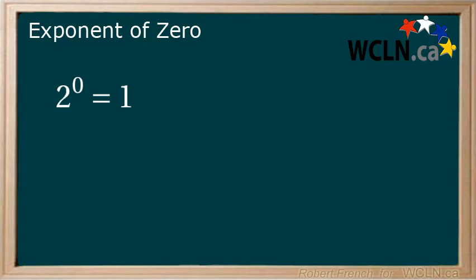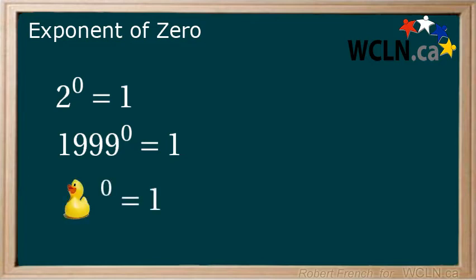2 to the power of 0 is equal to 1. 1999 to the power of 0 is equal to 1. A duck to the power of 0 is equal to 1. OK, maybe not this one.